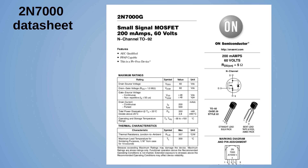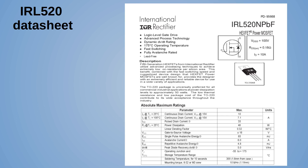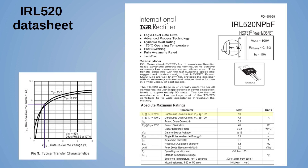I use either the 2N7000 or the IRL520, as these are the ones I have to hand. Looking at the least expensive first: the 2N7000 is about one third the cost of the IRL520. However, the 2N7000 can only handle continuous currents up to 200 milliamps, compared to the 400 milliamps we need — so that's not appropriate. Looking at the IRL520 datasheet, this can support up to 10 amps, which is more than sufficient. Note that's assuming a gate-source voltage of 10V, which is more than we'll be using here.